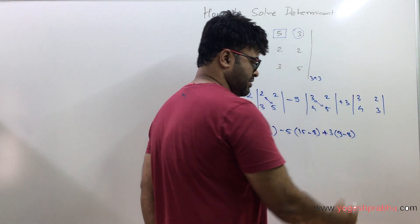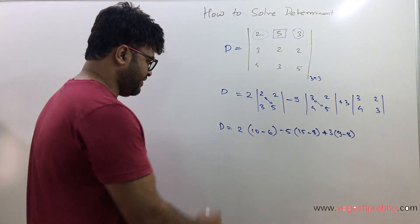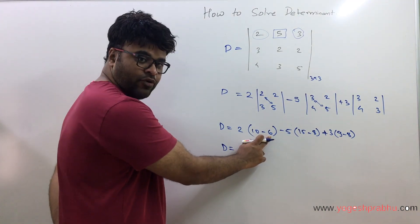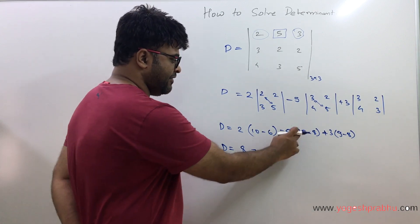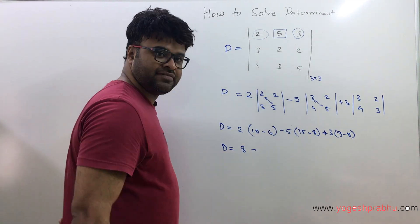Basically we have reduced it to normal simple numbers and we will simplify and get the answer for D. So this is 10 minus 6, that's 4, and 4×2 is 8. So I got the first one as 8. Then 15 minus 8 is going to be 7, and 7×5 is 35.